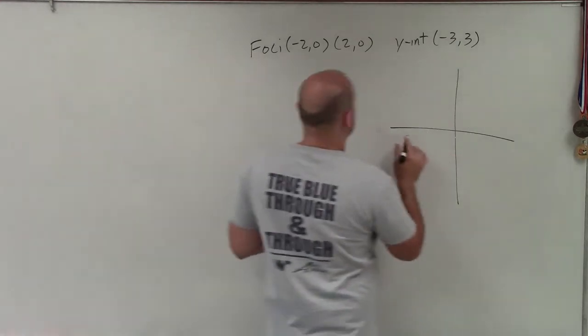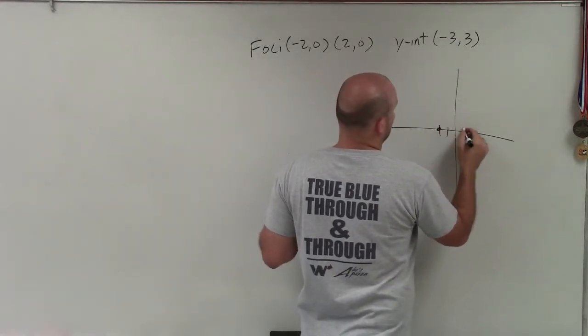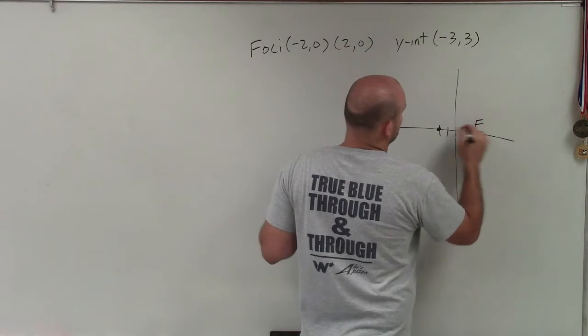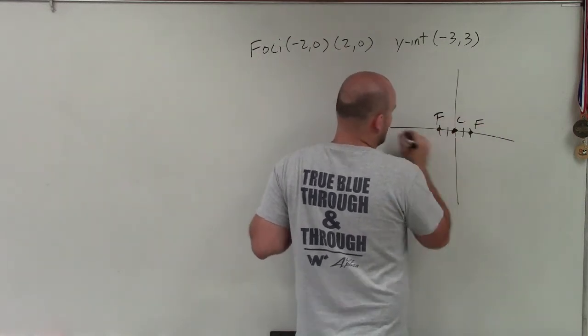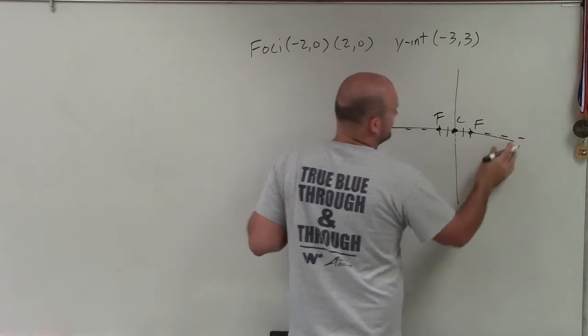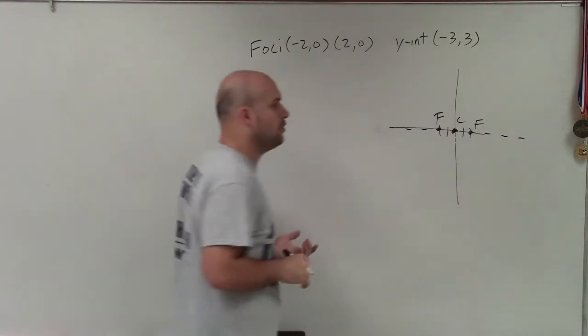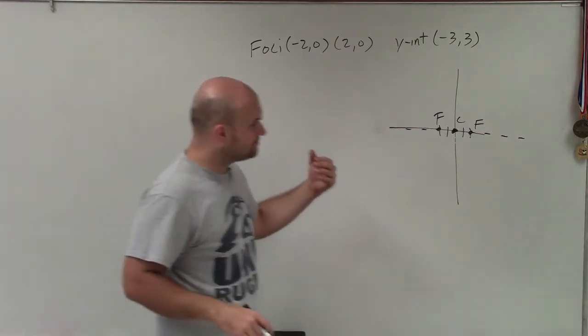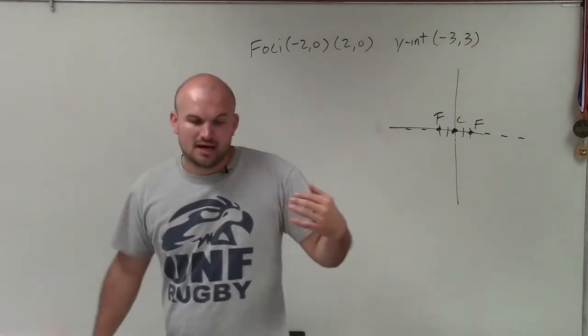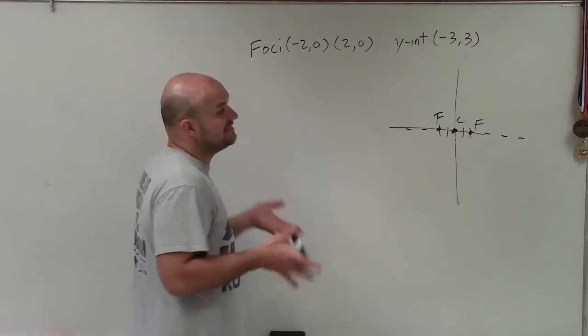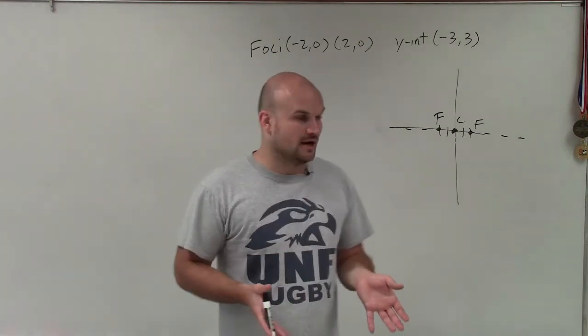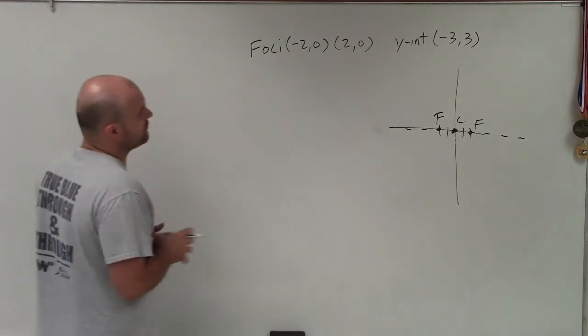When graphing the foci, which are at (-2, 0) and (2, 0), there's my two foci. Therefore, I know the center has to be in between them, and the major axis is going to be horizontal. Remember, the major axis contains the center, the foci, as well as the vertices. We're going to need to know what the vertices are, as well as the co-vertices.